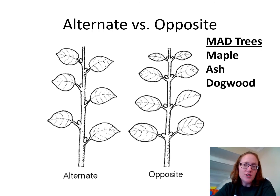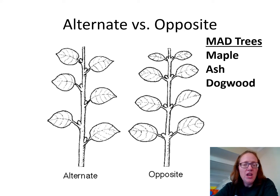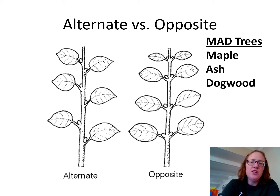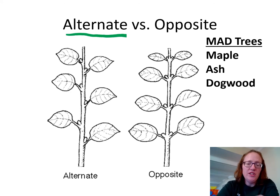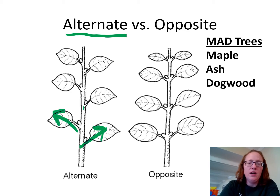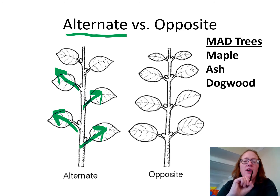The first characteristic of a tree that you need to be able to recognize is whether or not the tree is alternate or opposite in terms of its branching. The branching pattern is how the leaves actually come off the branch. With an alternate branching pattern, one leaf comes off on the right, one comes off on the left, one's on the right, one's on the left — it alternates back and forth.